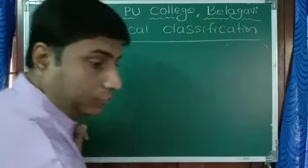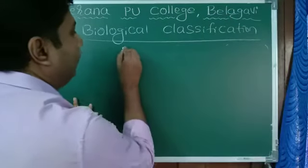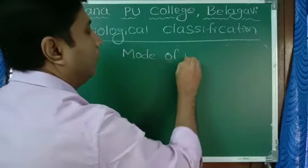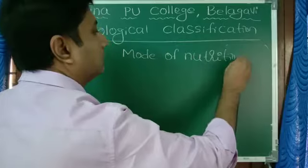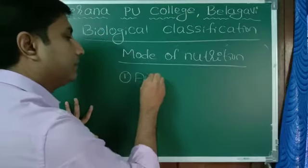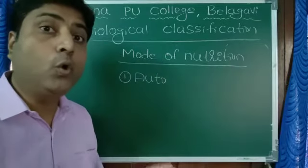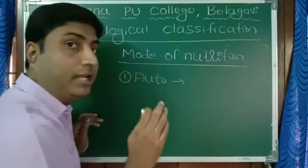Now coming to the mode of nutrition in bacteria. Mode of nutrition: some are autotrophic. Autotrophic means they prepare their own food, same like how we tell photosynthetic.